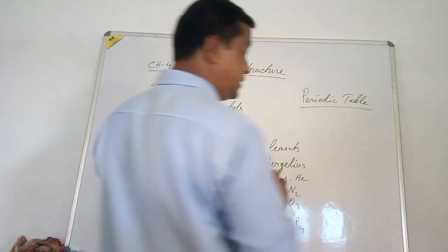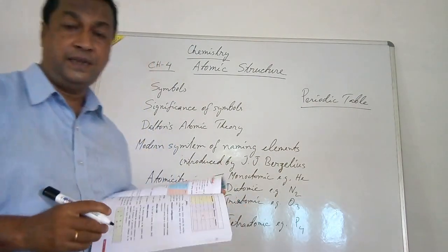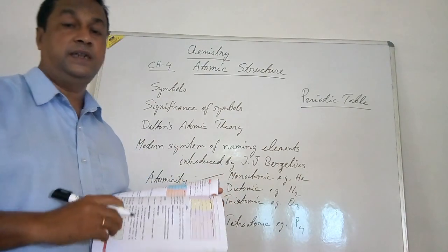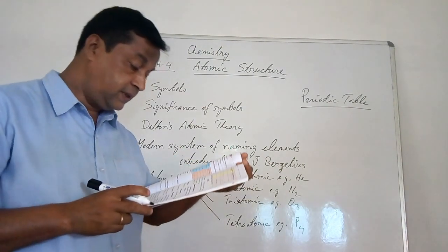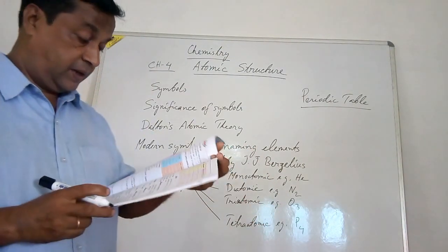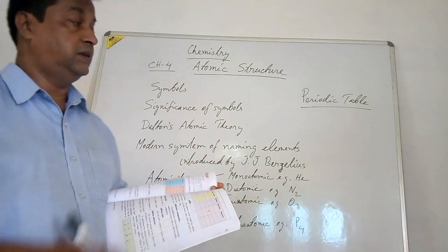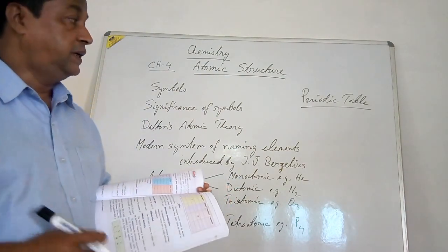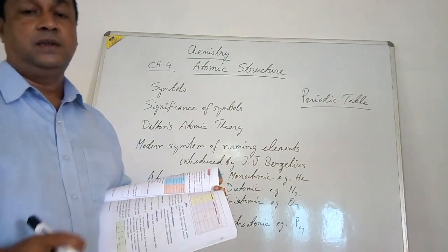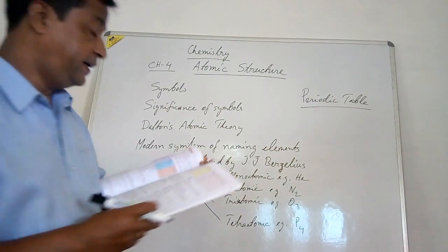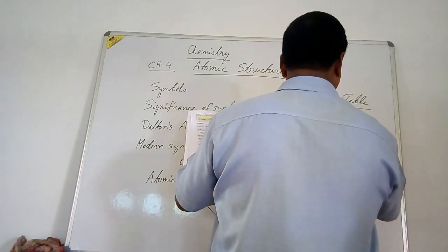The periodic table is a table in which all the elements are arranged in vertical columns or rows according to similarity in their properties. It is a chart where elements are grouped in vertical columns, and they are also arranged in horizontal rows.